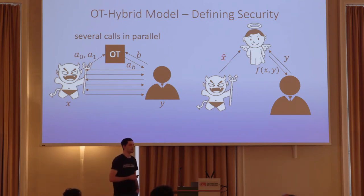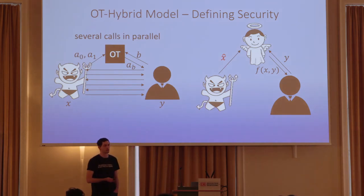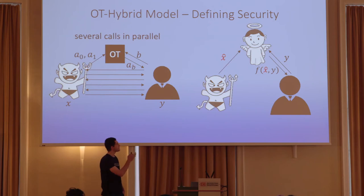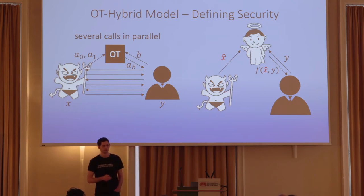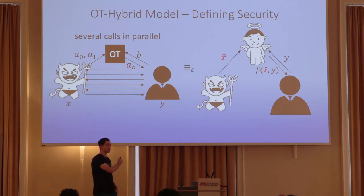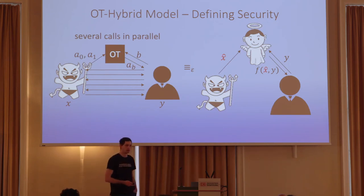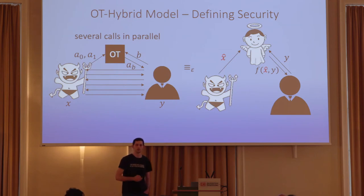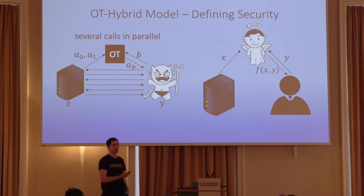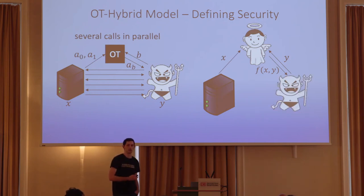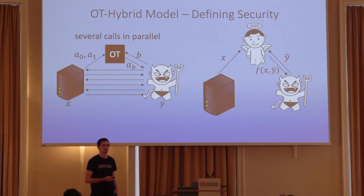There exists a malicious server in the ideal world that is also allowed to change the input it sent to the corrupted party, which also affects the output. We want this simulator — this malicious adversary in the ideal world — to simulate the view of the real-world server. We want the statistical distance between the two worlds to be very small. When I say we have perfect security, I mean the distributions are identical. We also want security versus a malicious client: for any malicious client in the OT hybrid model, there exists a malicious client in the ideal model that can simulate the view of the real-world client.